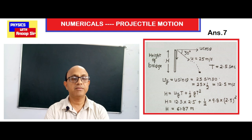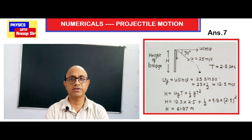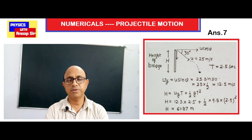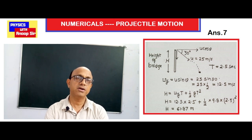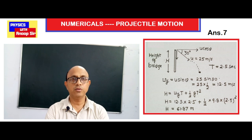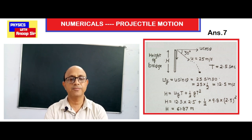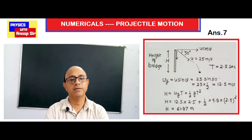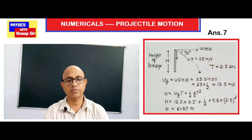To find the height of the bridge, we use the equation: h = ut + ½gt². Here we use the vertical component of velocity in place of u. So h = 12.5 × 2.5 + ½ × 9.8 × (2.5)². Solving this gives the bridge height as 61.87 meters.